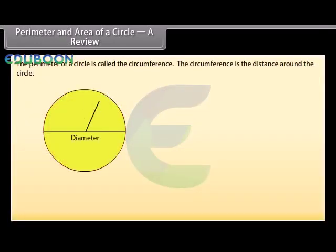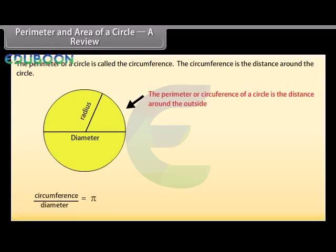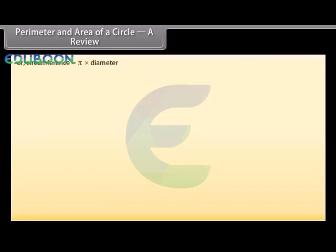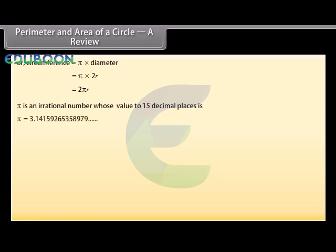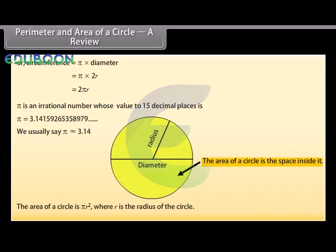A review: The perimeter of a circle is called the circumference. The circumference is the distance around the circle. The ratio of circumference to its diameter is constant, denoted by pi. Circumference equals pi times diameter, which equals pi times 2r, so circumference equals 2πr. Pi is an irrational number whose value to 15 decimal places is 3.14159265358979. We usually say pi is approximately equal to 3.14. The area of a circle is πr², where r is the radius.